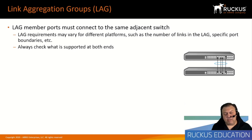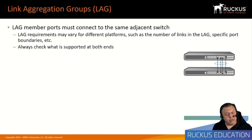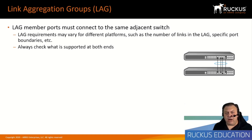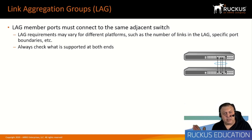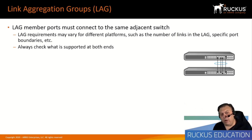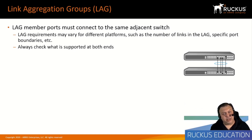For example, if you have a stack of ICX 7150s connecting to a stack of 7250s or higher, the 7150 portfolio has a maximum of eight ports in a link aggregation group, while 7250s and higher support up to 16. So you would not be able to create a 12- or 16-port LAG from a stack of 7150s to a stack of 7250s — you have to follow the more restrictive limit of the 7150 family. This is especially important in multi-vendor environments.